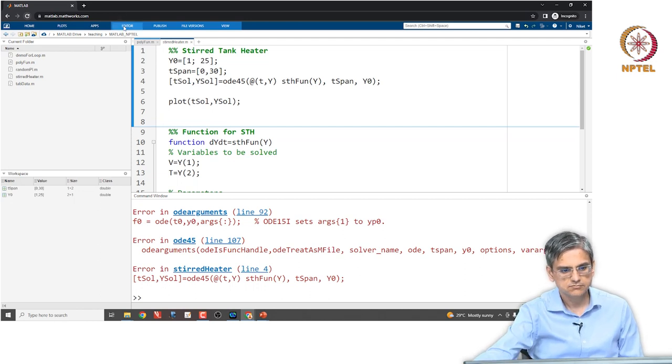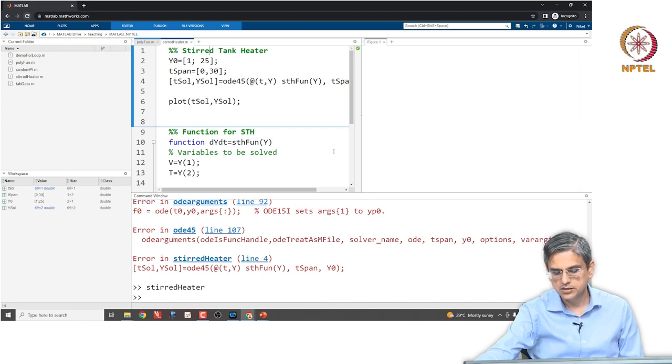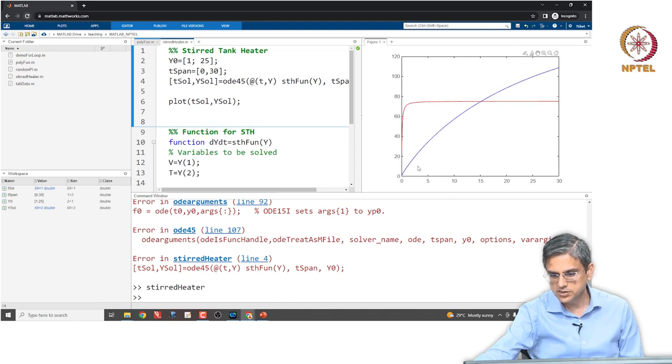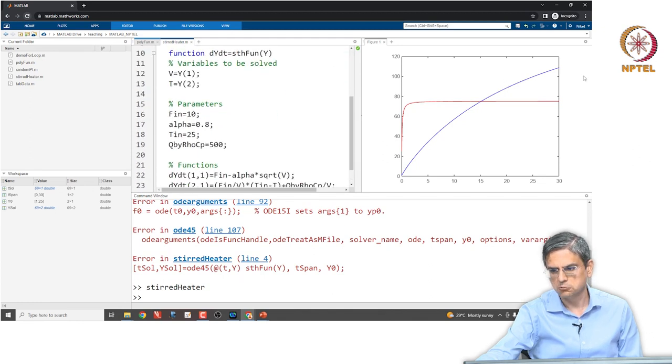Run this, it is solved and that is figure 1. This is how the volume is increasing and this is how the temperature is increasing. The temperature has increased and settled down at almost 75 degrees Celsius. The volume is increasing to approximately 104 or 120, something of that sort.